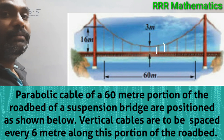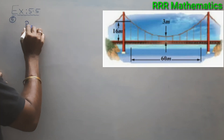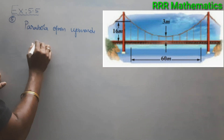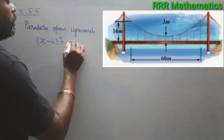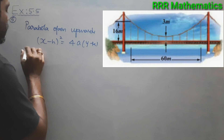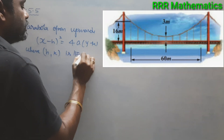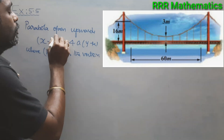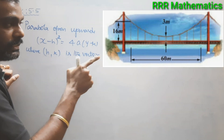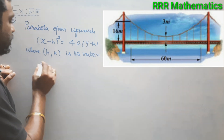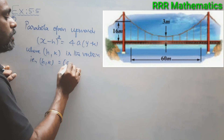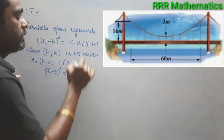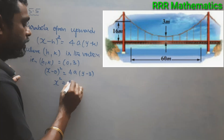From the diagram, the parabola opens upward. The general equation will be (x − h)² = 4a(y − k), where (h, k) is the vertex. In this case, the vertex is on the y-axis at (0, 3), so h = 0 and k = 3. Substituting: x² = 4a(y − 3).